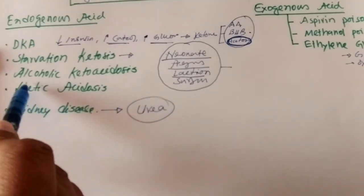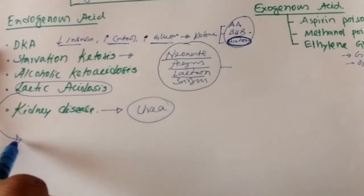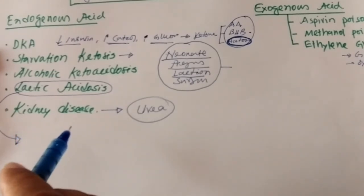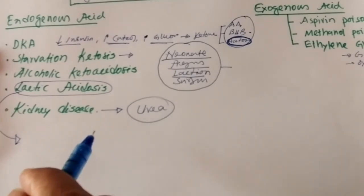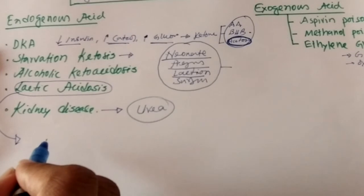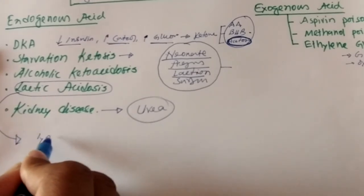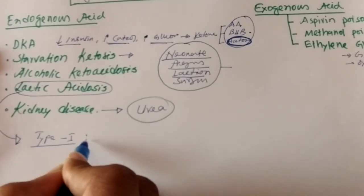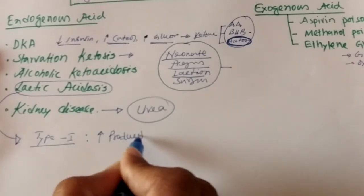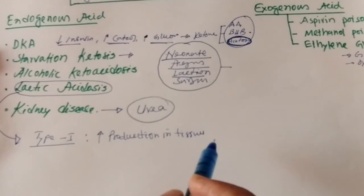Now, lactic acidosis. The definition of lactic acidosis is very simple — it is due to excess accumulation of lactic acid in the body. Why is lactic acid produced in high amounts? There are two types of lactic acidosis. Type 1 lactic acidosis involves excess production of lactic acid in tissues, produced by the anaerobic glycolysis pathway.